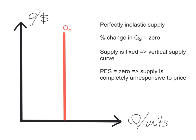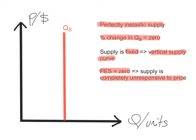Just like price elasticity of demand, there is a range of values for price elasticity of supply that we need to be familiar with. The first example is a vertical supply curve — this is perfectly inelastic supply, where the percentage change in quantity supplied is 0. Since 0 divided by any number equals 0, the price elasticity of supply equals 0. This means supply is completely unresponsive to price; supply is fixed and does not change regardless of the price level.